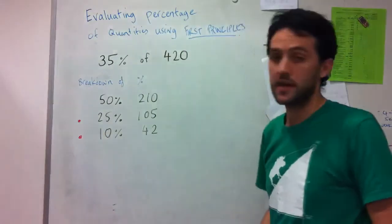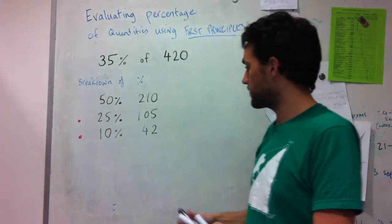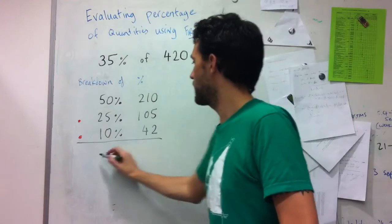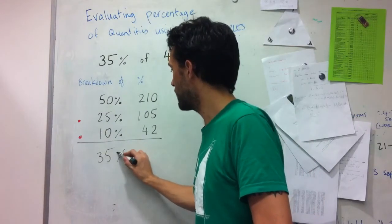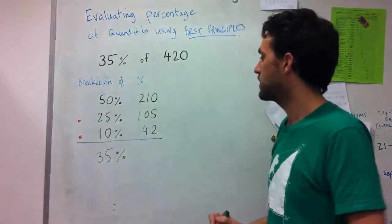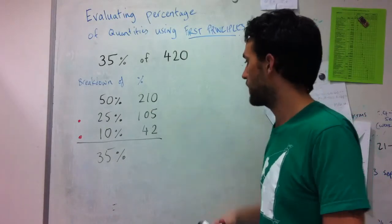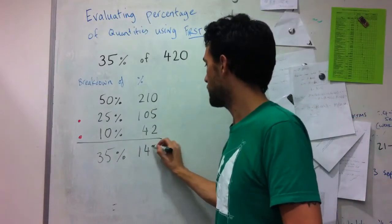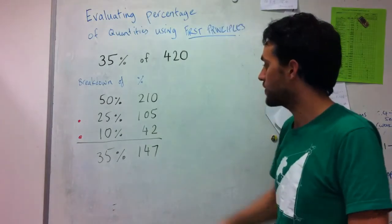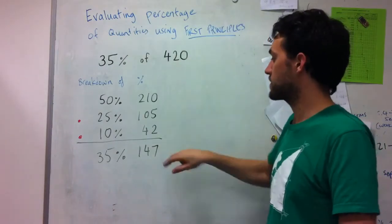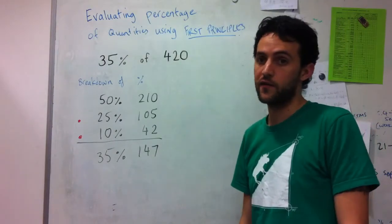And then I can just combine these two, the 25% and the 10% to give me 35%, and 105 plus 42 gives me 147. So I can say that 35% of 420 is 147.